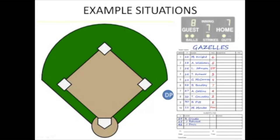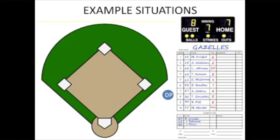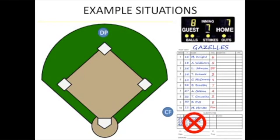Here's another example. It's the bottom of the seventh on a long tournament day. You are the visitors and have a one-run lead. Your opposition is a power-hitting team and has been giving your outfield a workout all day with long outfield fly balls. Your center fielder cannot continue due to the heat. The top of their order is due up, but you have used all of your substitutions. Without the DP-FLEX, you would be forced to try and hold back this team with eight players on defense. However, you understand the DP-FLEX rule, and you send the DP in to play center field.